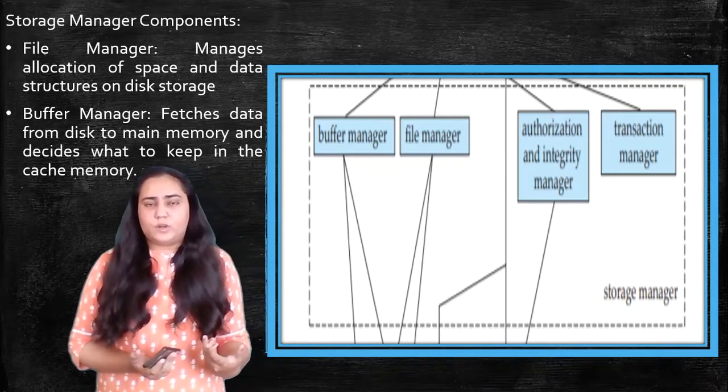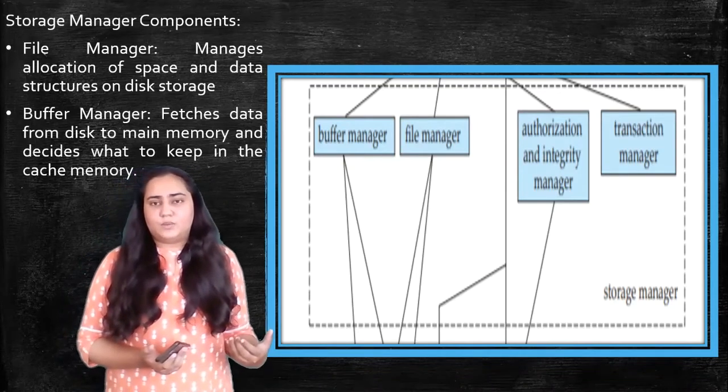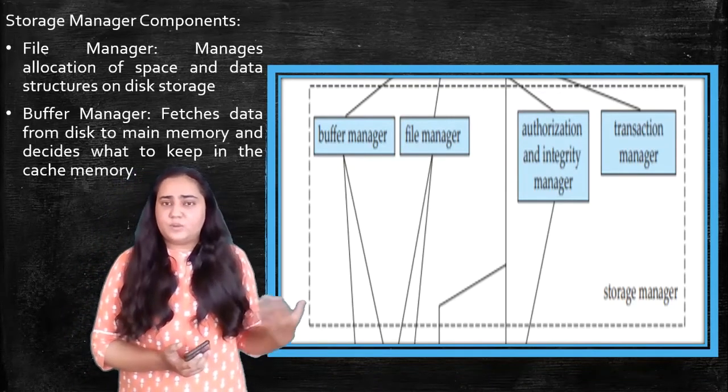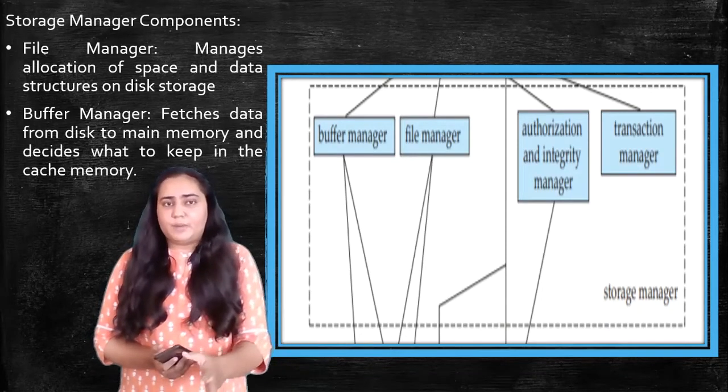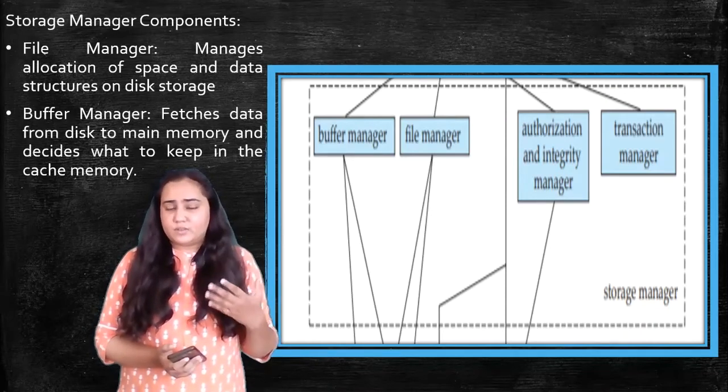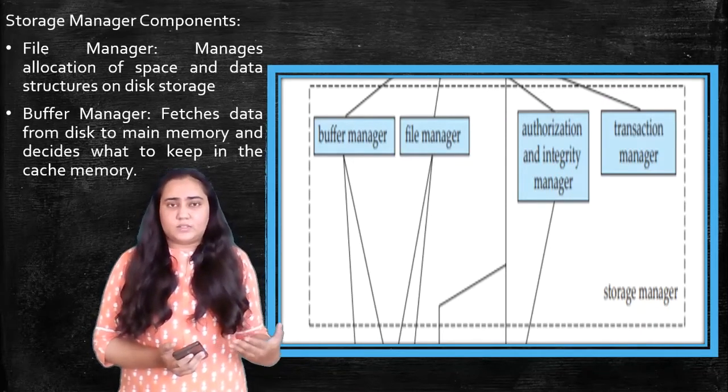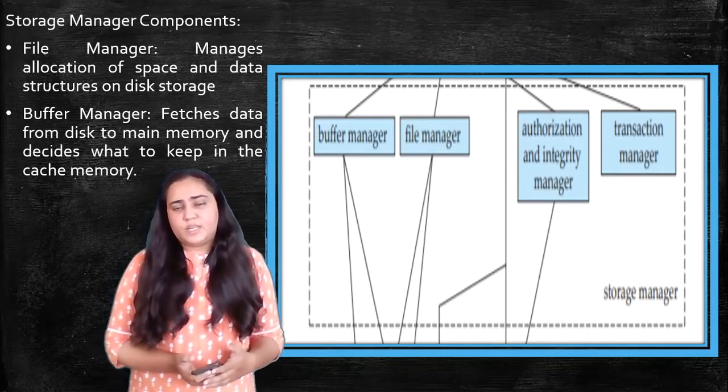If you want to work on a file, a Word document, then that document is opened and brought to the main memory so that you can make changes to it. And once that is done, it is kept back into the secondary memory so that it can stay there forever. It does not get deleted the next day you open it.